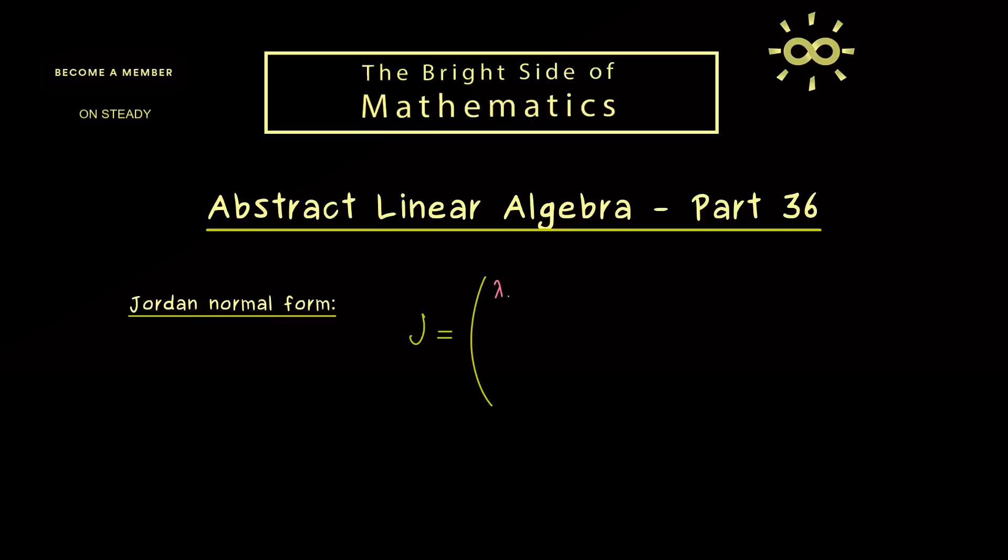And in it most of the entries are zero, only two diagonals are occupied. So for example we could have two different eigenvalues, lambda1 and lambda2. These we find on the main diagonal and above it we could find 1s.